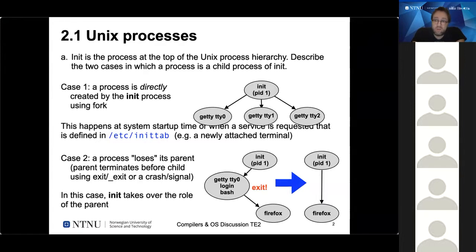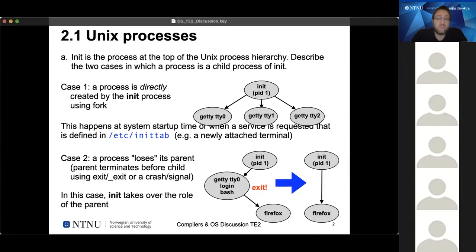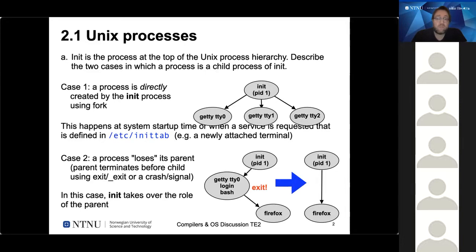This asks about the init process specifically. With many Unix systems, init is the process which starts all the other Unix processes, sitting at the top of the Unix process hierarchy. It has process ID 1. The first question was to describe the two cases in which a process is a child process of init. The first is the obvious case: a process is directly created by init using fork. When init starts up, it reads a special configuration file, usually /etc/inittab — a table for init that tells it which processes to start.